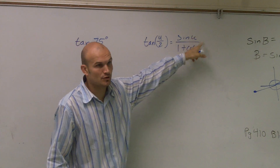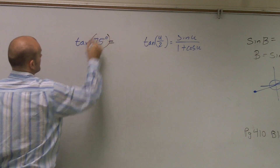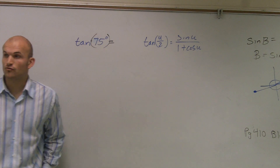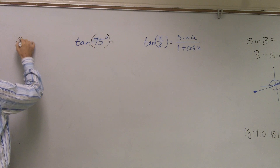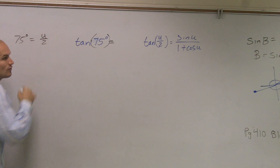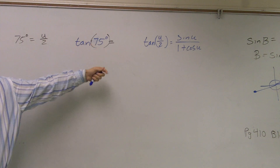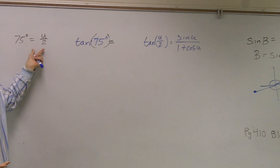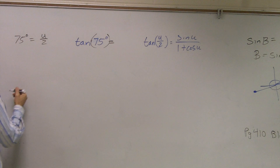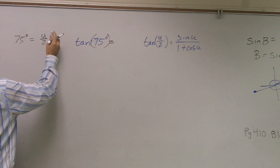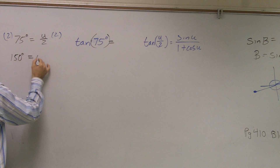So we have u divided by 2, and then we have u. Here, it's saying tangent of 75 degrees — that equals what? Well, it says using the half-angle formula. So what I'm going to expect is that 75 degrees is equal to u over 2. Since that's the question proposed to us, we're using the half-angle formula, so tangent of 75 is going to be my half-angle. Therefore, I need to figure out what u is — multiply both sides by 2, and 150 degrees equals u.